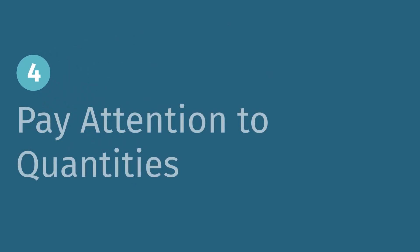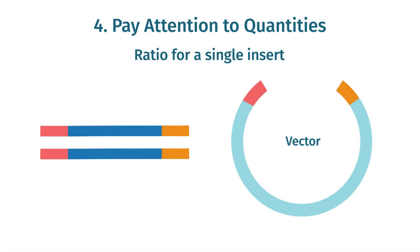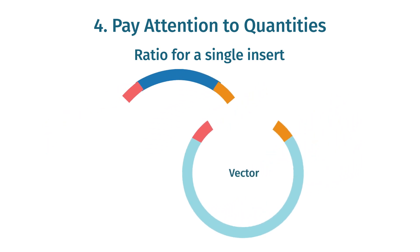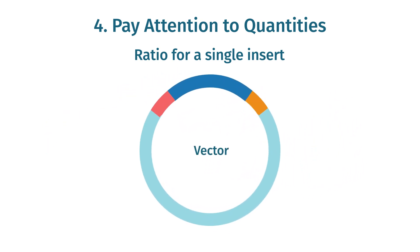Tip 4. Pay attention to quantities. Molar ratios matter when setting up your infusion reactions. Manufacturer guidelines suggest a 2 to 1 insert-to-vector molar ratio for a single insert reaction.